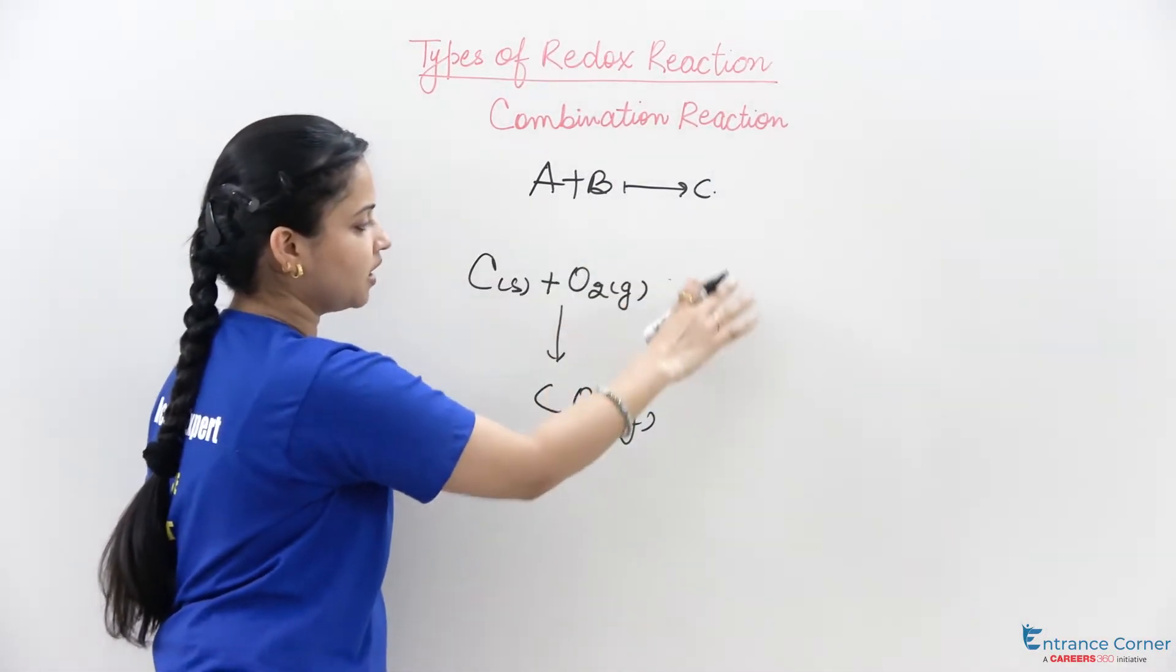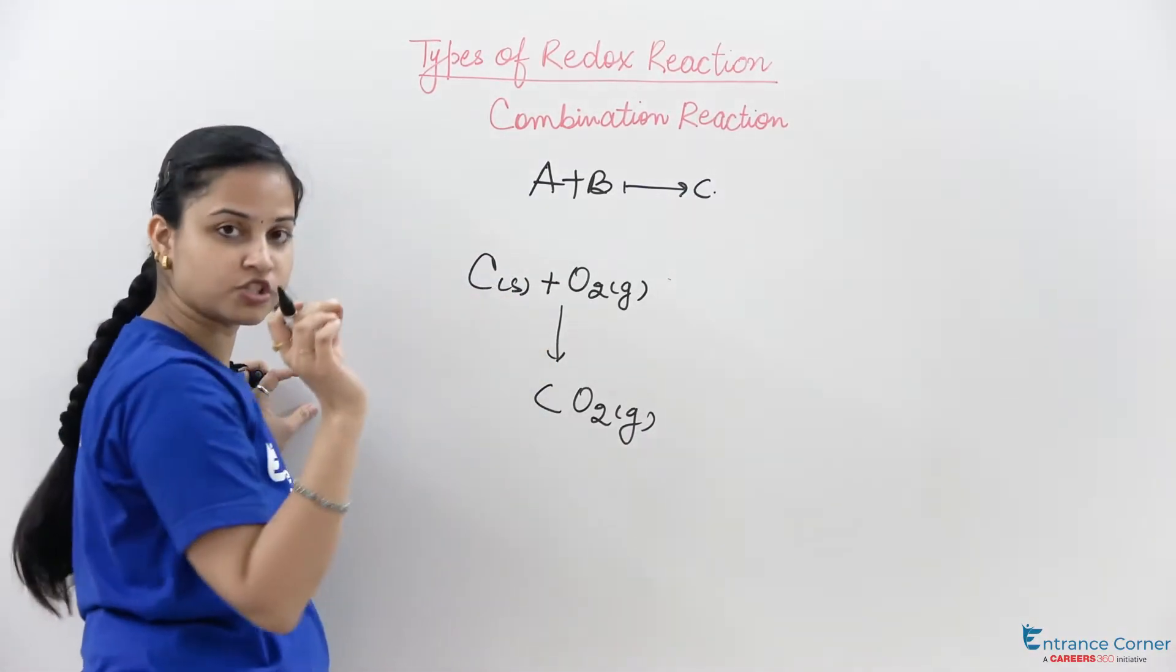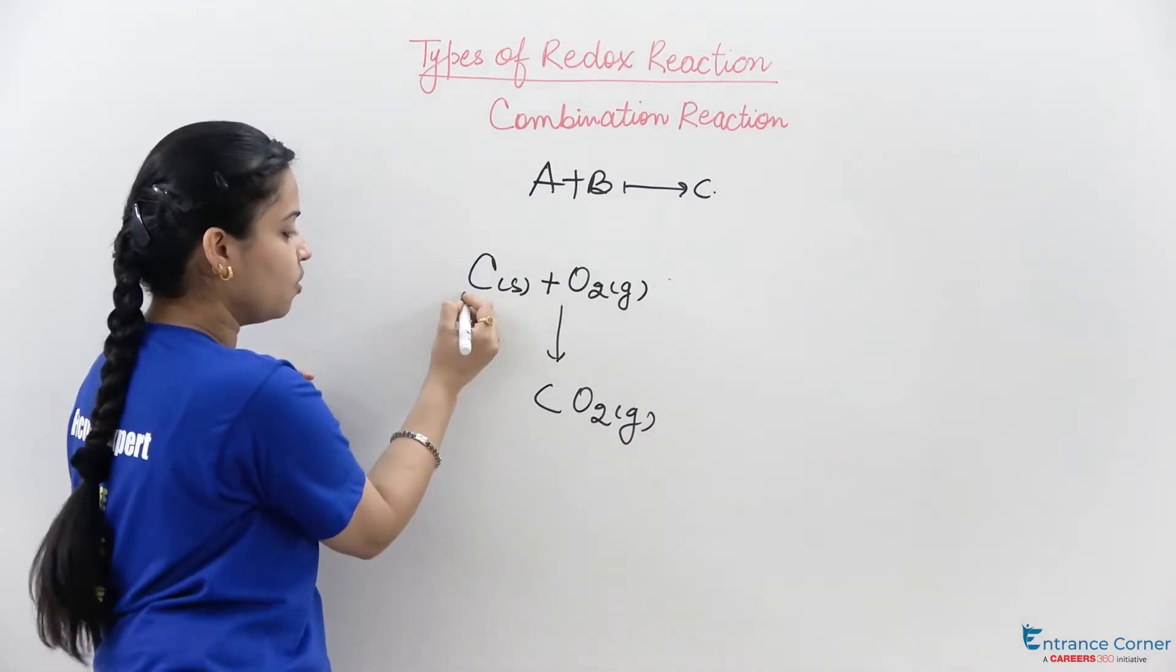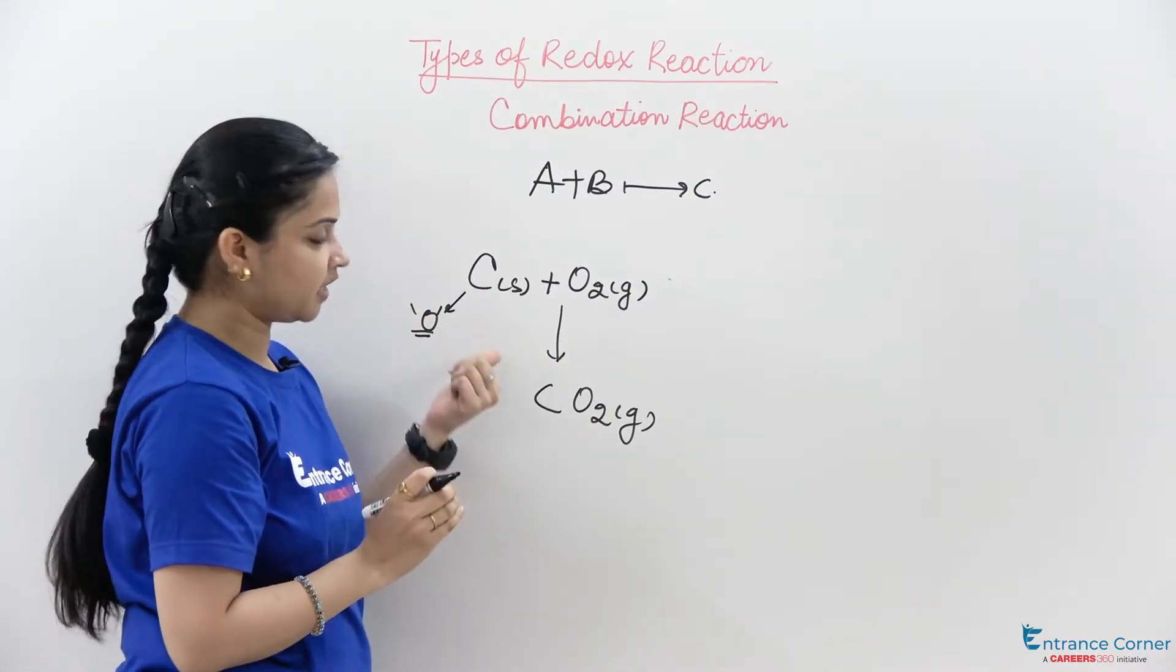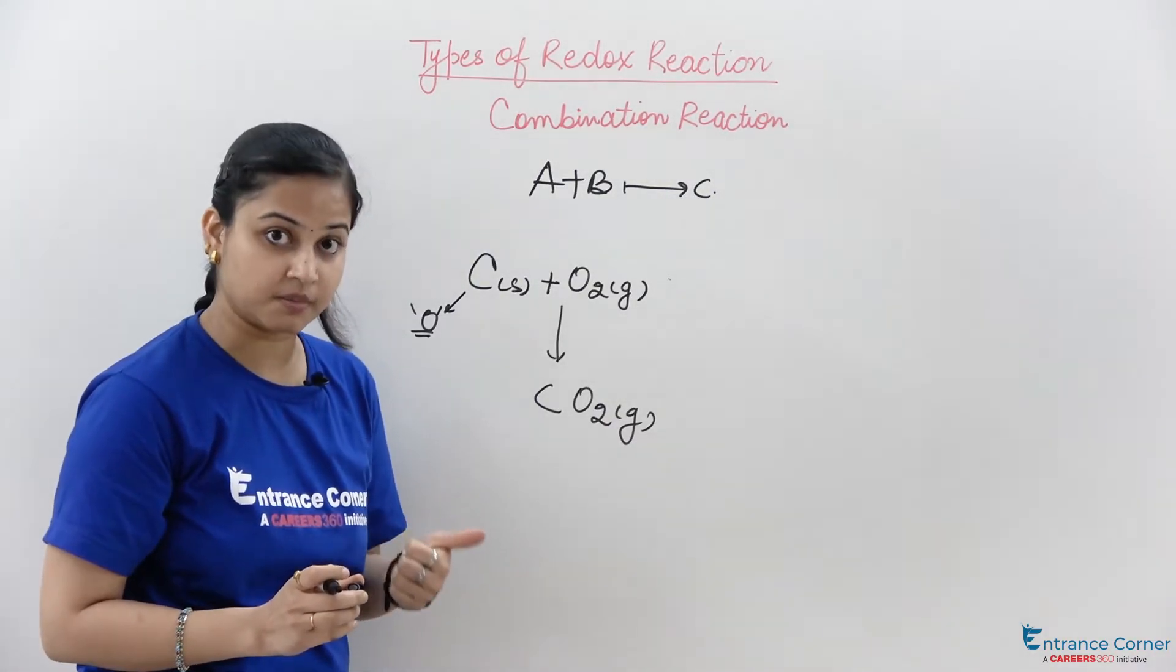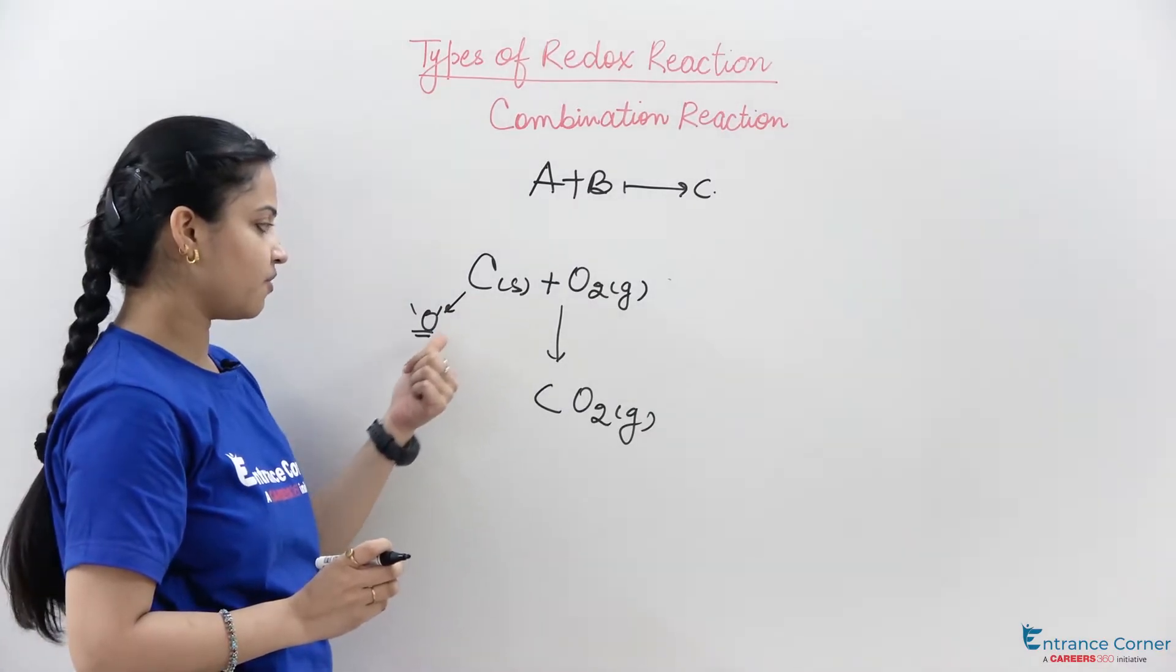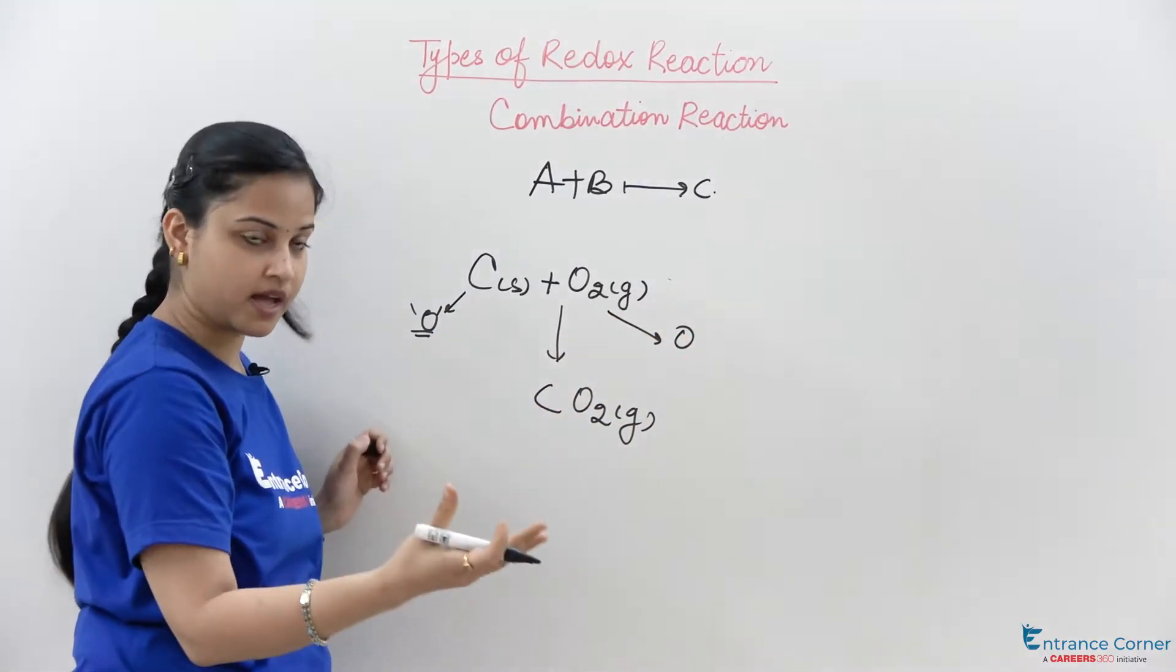See, they both are in the elemental state only. Now the oxidation number of carbon is zero because in free or uncombined state, an atom or ion has an oxidation number of zero. So carbon will have oxidation number zero, O2 will have oxidation number zero as well.